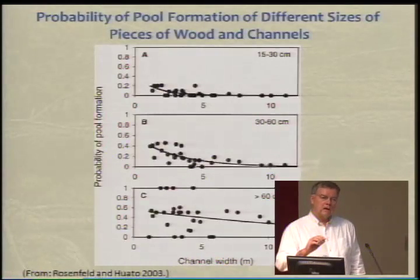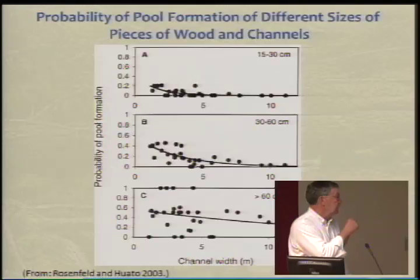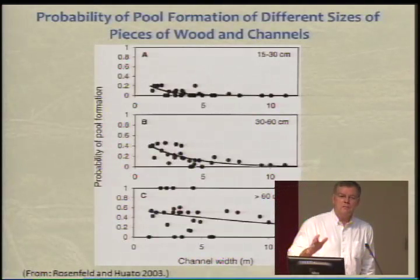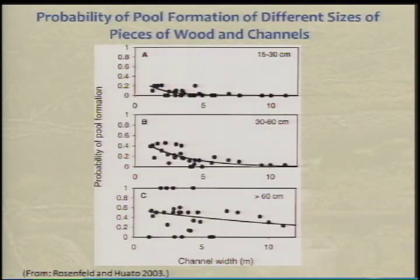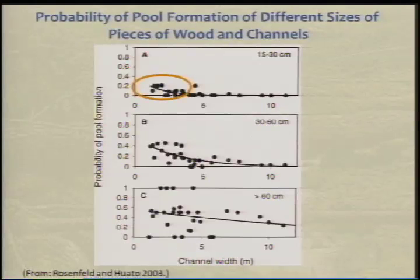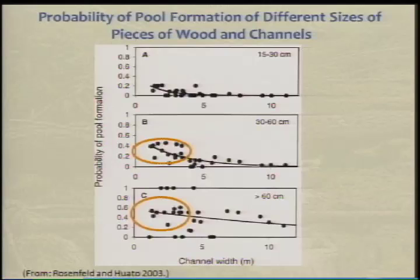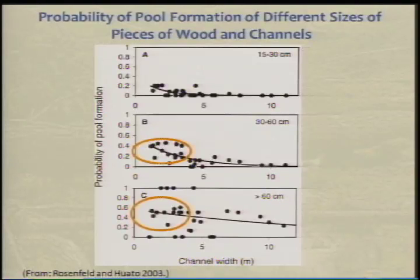In terms of the size of wood, there's the issue of small wood. If we look at this study from BC talking about the size of wood and pool formations, certainly small wood can form pools — there's no argument about it. But if you look at the likelihood, it's relatively low compared to when you get larger pieces of wood. So if we're talking about ecological functions, it's not whether something can do something, but the likelihood that it's going to do it. That's something we need to be considering when we talk about the functions of wood.